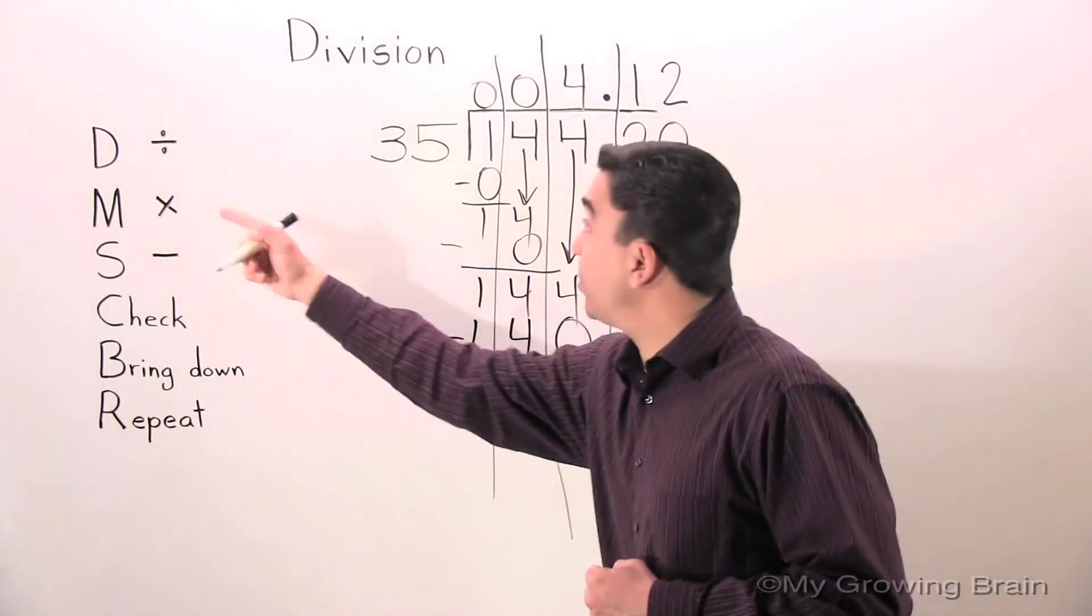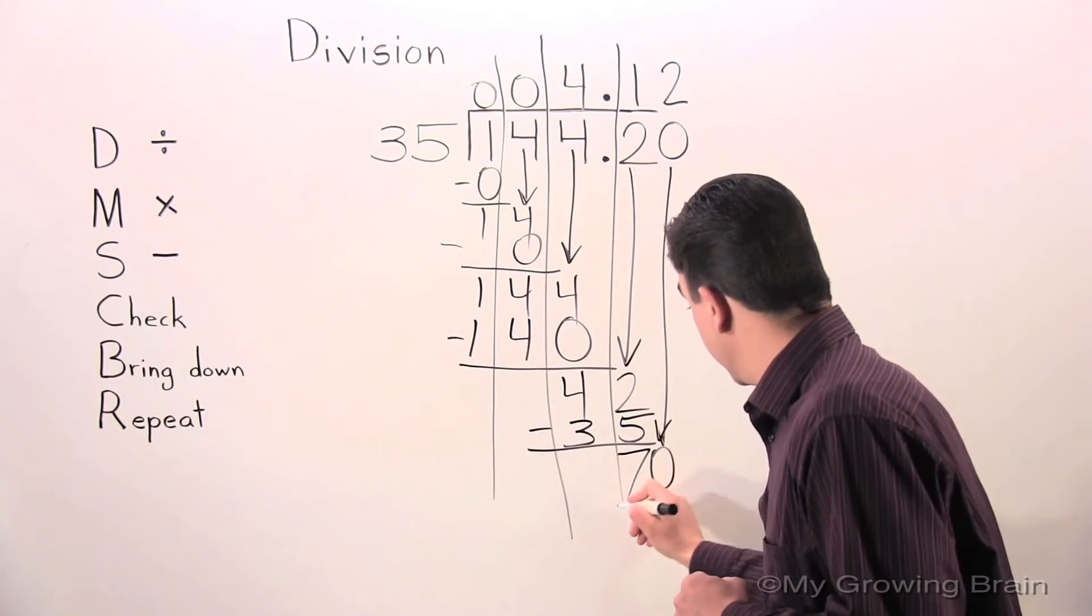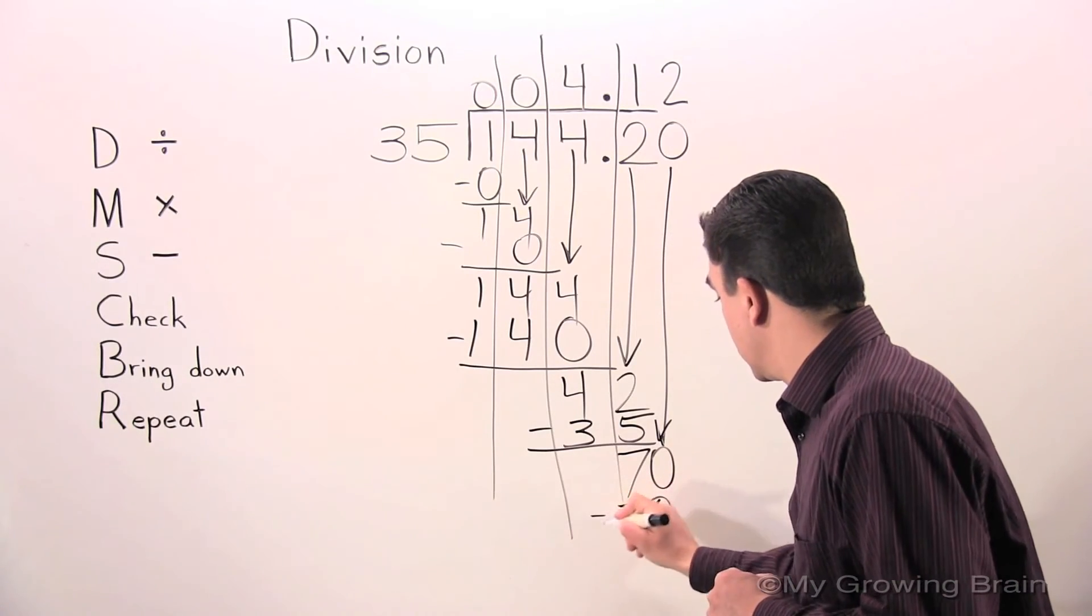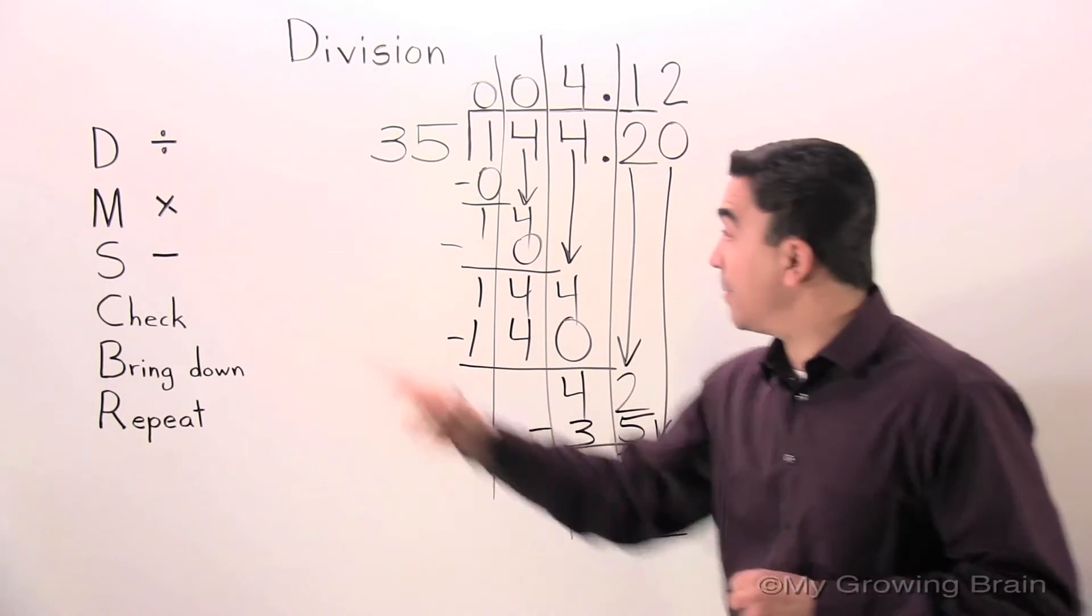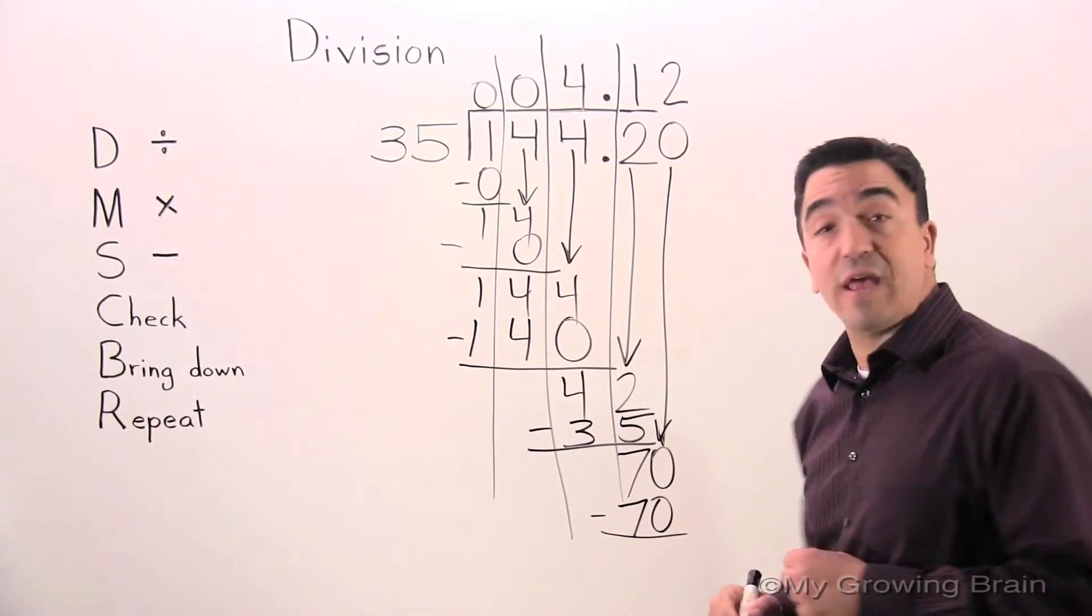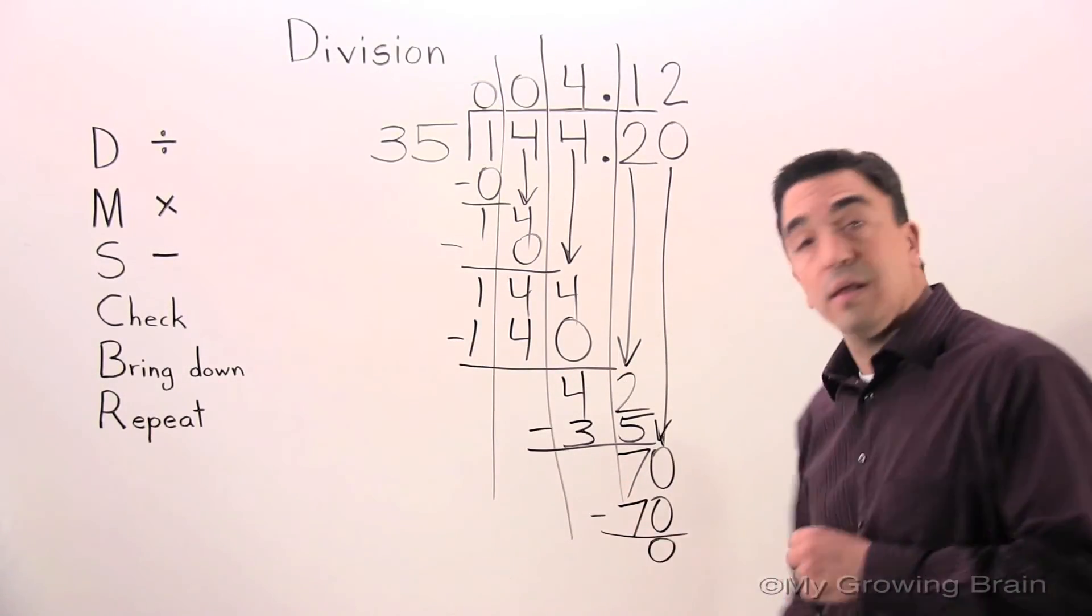Next step: multiply. 35 times 2 is 70. Next step: subtract. 70 minus 70 is 0.